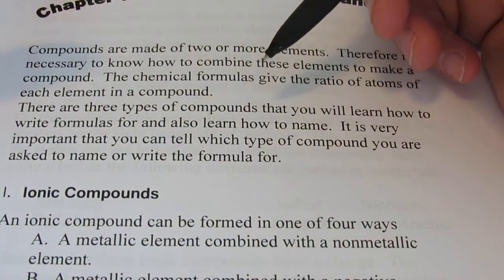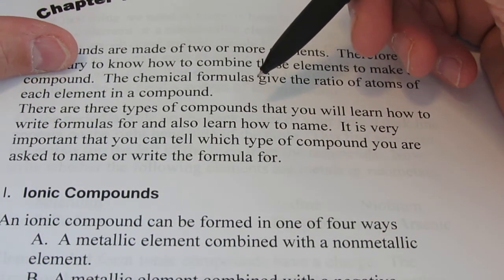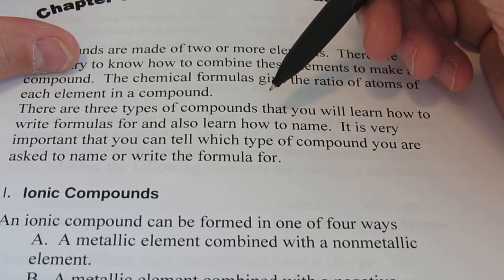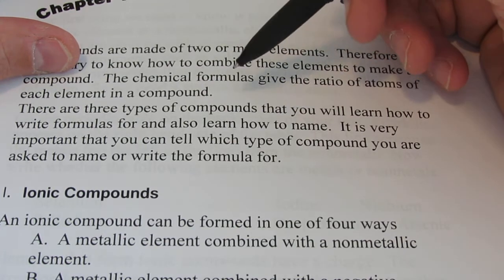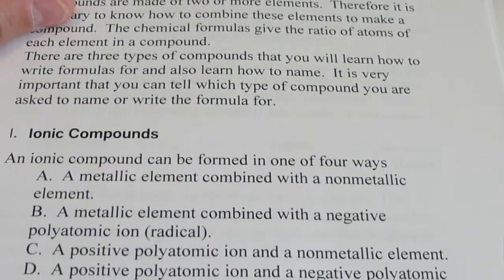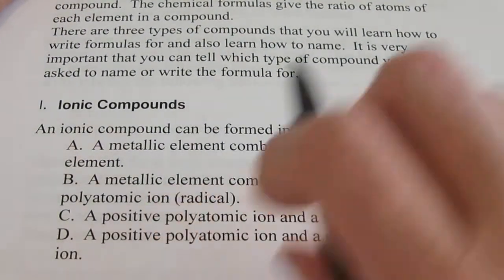There are three types of compounds that we're going to learn how to name and write the formulas for in this chapter. Now, it's going to take us a few videos to do that. It's very important that you can tell which type of compound you're asked to name or write formulas for. I want to start with ionic compounds.